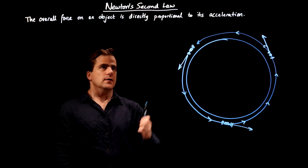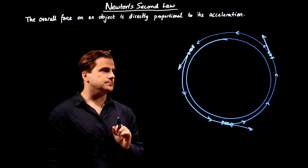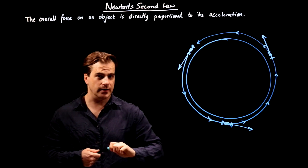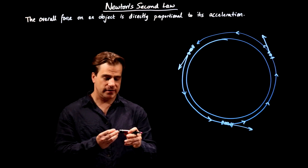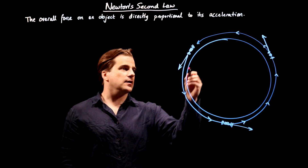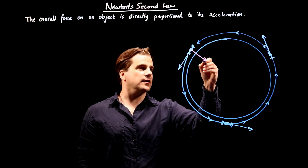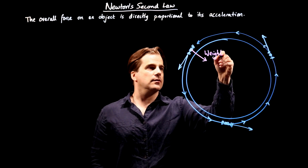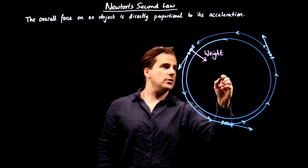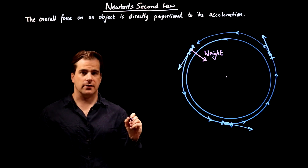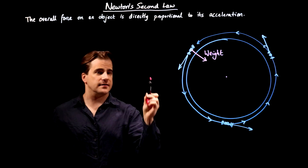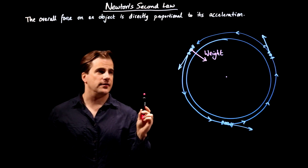The overall force on an object is directly proportional to its acceleration. If the ISS is continuously accelerating, it must have an overall force on it according to Newton's second law. And that force is due to gravity — its weight. Like any other massive object on or near the Earth, it's pulled towards the centre of the Earth by the Earth's gravity. And that force — that pink arrow — is the only force acting on the International Space Station.